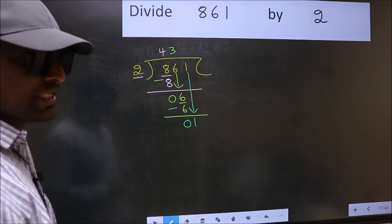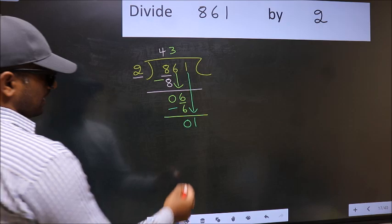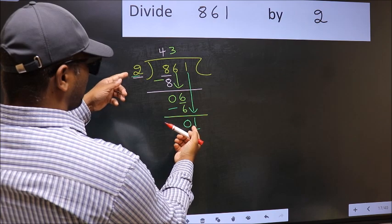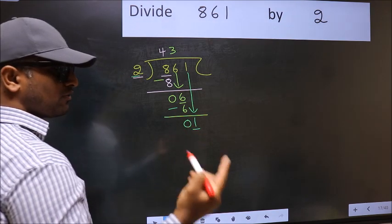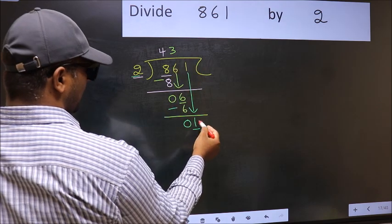After this step, the mistake happens. And the mistake is this. Here we have 1 and here 2. 1 is smaller than 2. So what many do is, they directly put a dot and take 0.